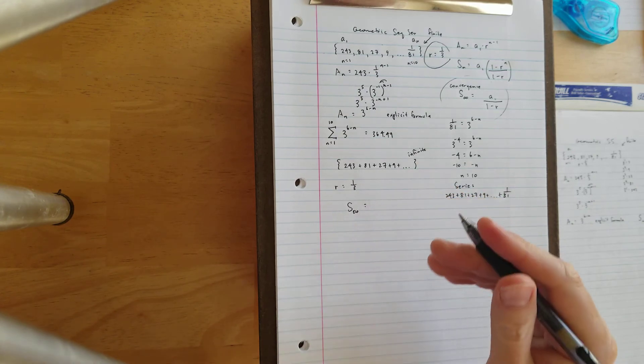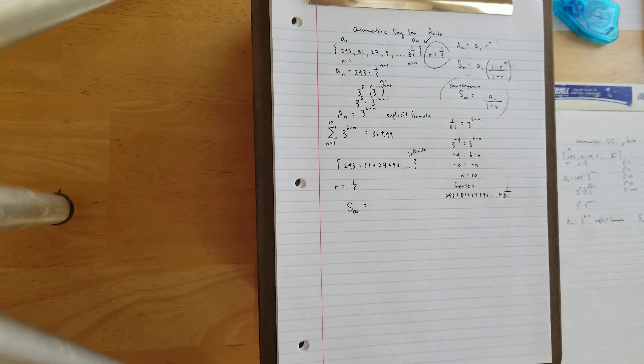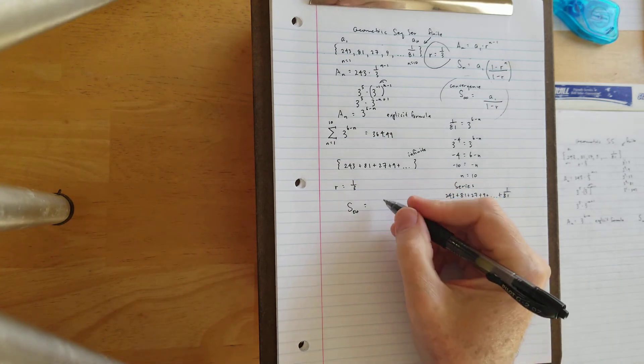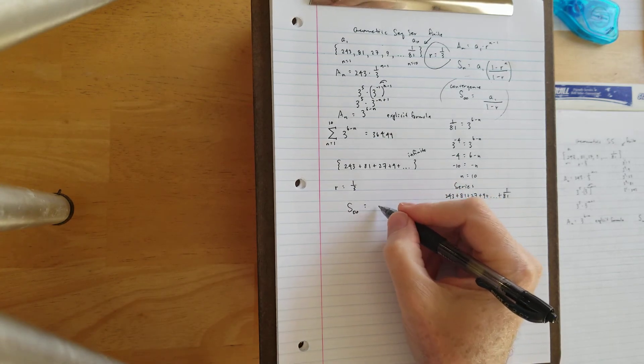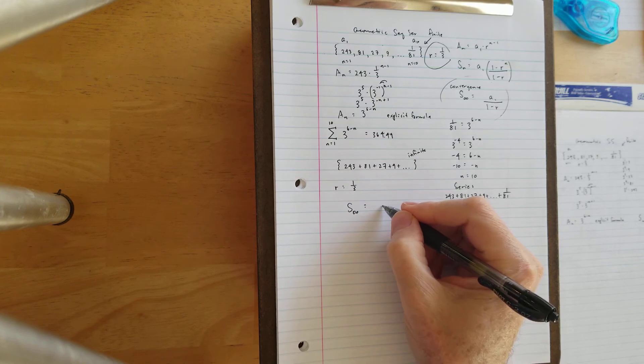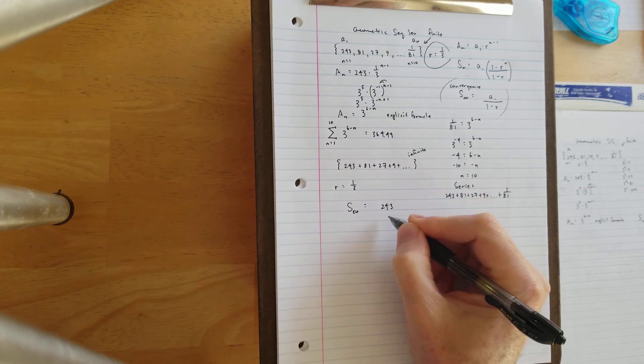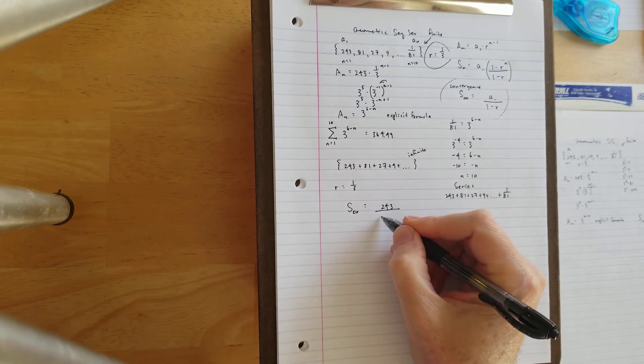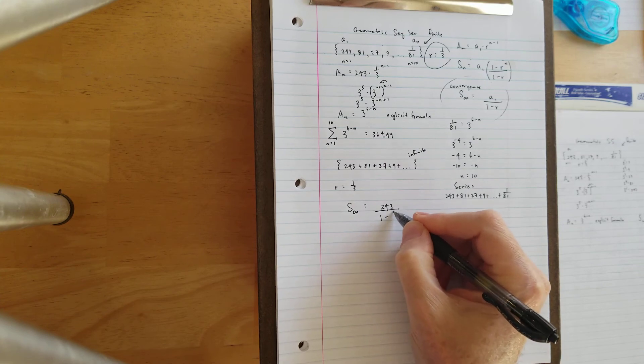And so there's a limit. One might say, use the word horizontal asymptote, but for us, we'll stick with limits. But S sub infinity is A sub 1, which is 243, divided by 1 minus R, which is 1 third.